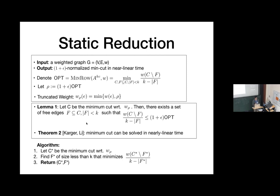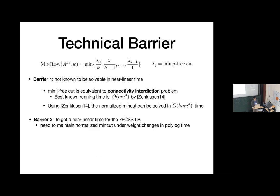It remains to prove Lemma 1. I divide it into two claims. Claim 1: for any cut whose truncated weight is smaller than K·opt·(1+epsilon), there exists a free set F of size at most K such that the normalized cost is 1-plus-epsilon optimal. Claim 2: there exists a cut — the min-cut — that is smaller than that threshold. The question arose whether K being fixed made the interdiction harder; the normalization factor and the approximation are what make this problem easier than interdiction.